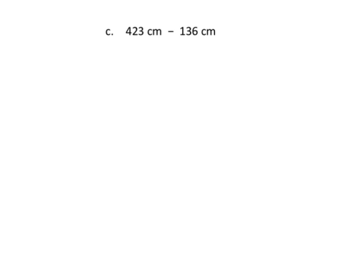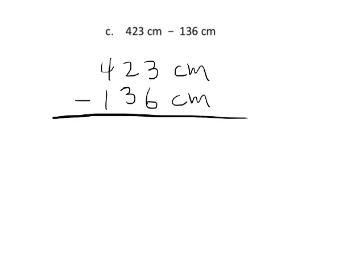On this problem we have 423 centimeters minus 136 centimeters, and we're going to write that vertically. We look at the ones column: 3 ones take away 6 ones — we don't have enough ones. So we go to the tens place, where we have 2 tens. We take one of those tens and regroup it with the ones, giving us 13 ones. 13 minus 6 gives us 7.